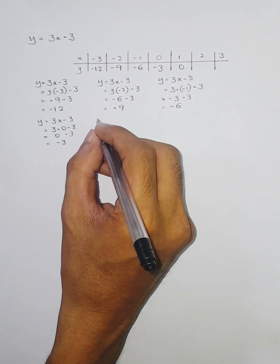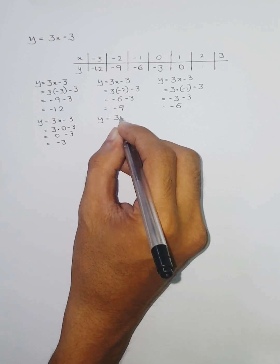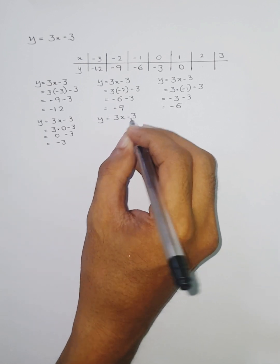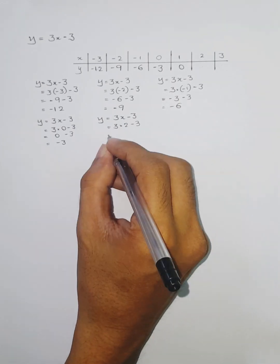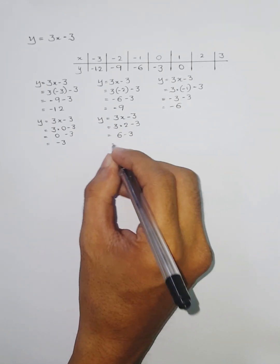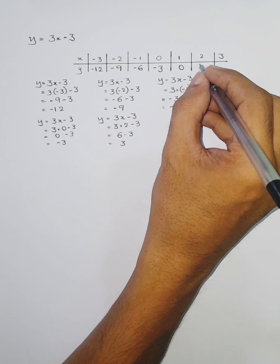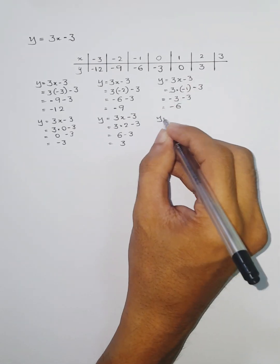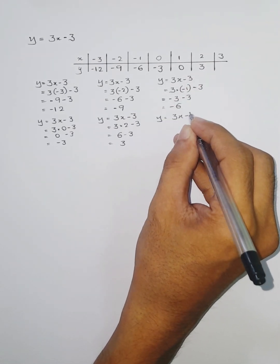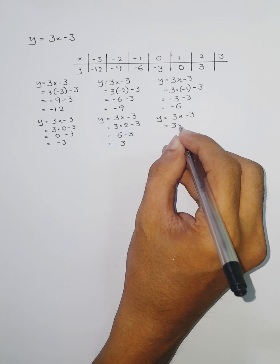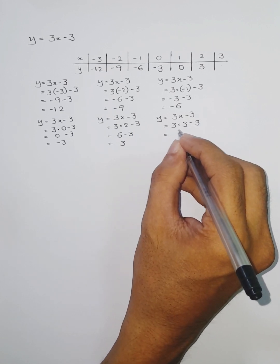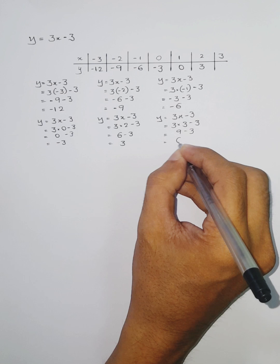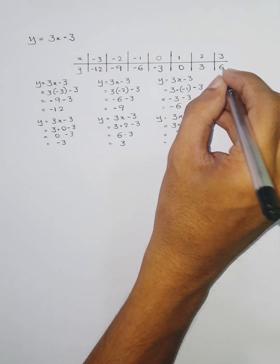You have to simplify and get the answer. Then 3 times 2 is 6, 6 minus 3, the answer is 3. And now the final one, 3 times x is 3, so 3 times 3 is 9, 9 minus 3 is 6.